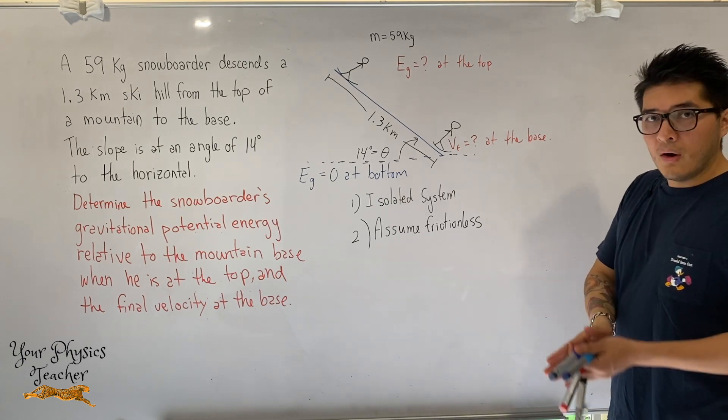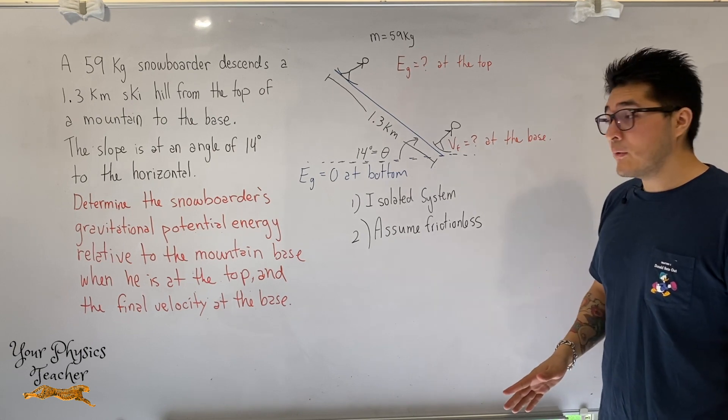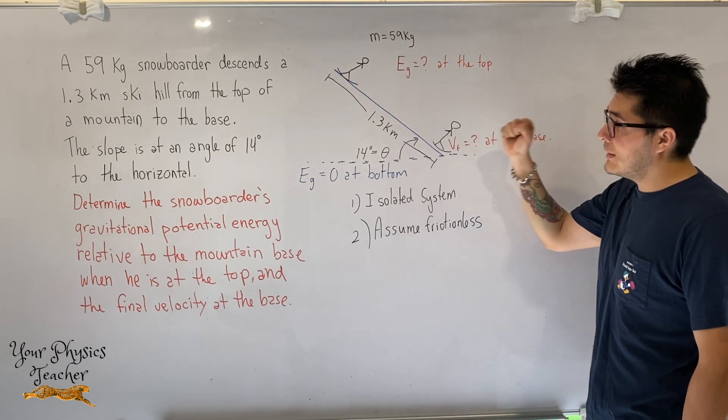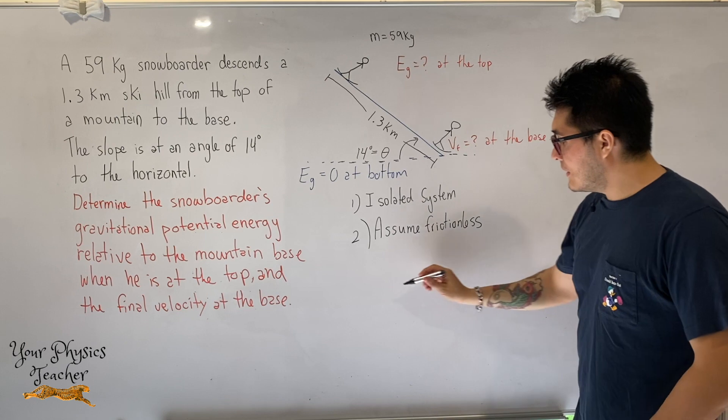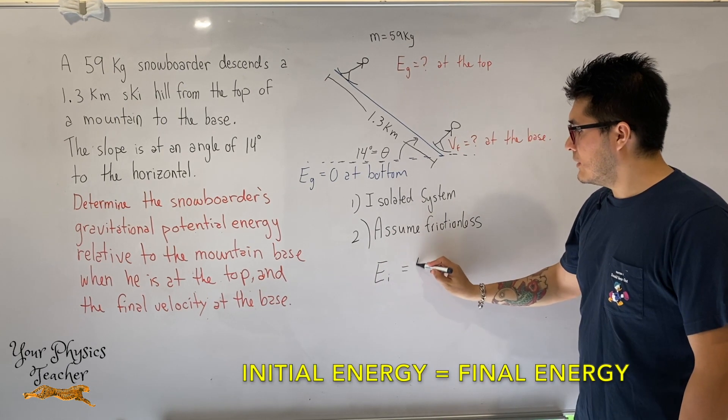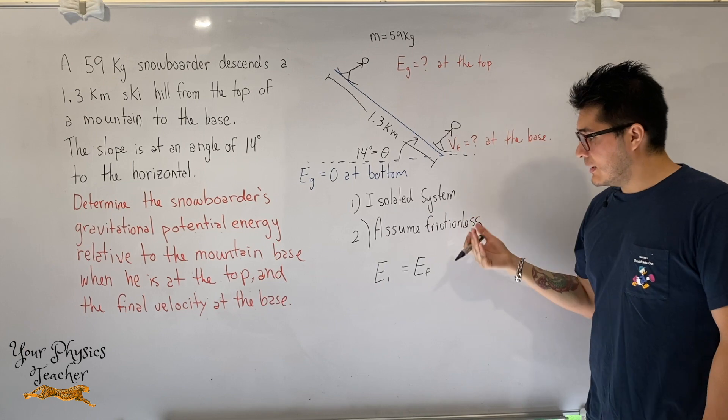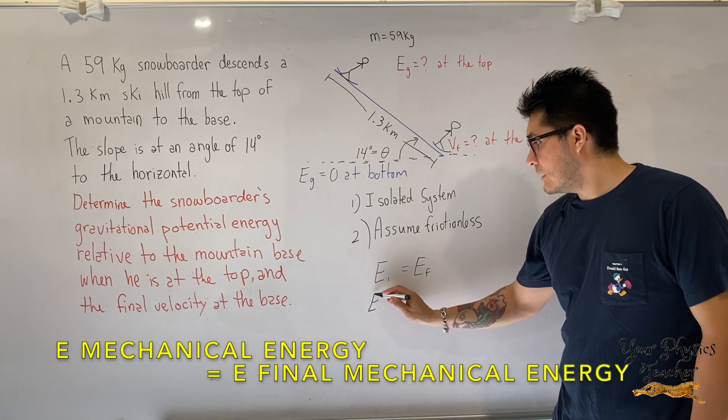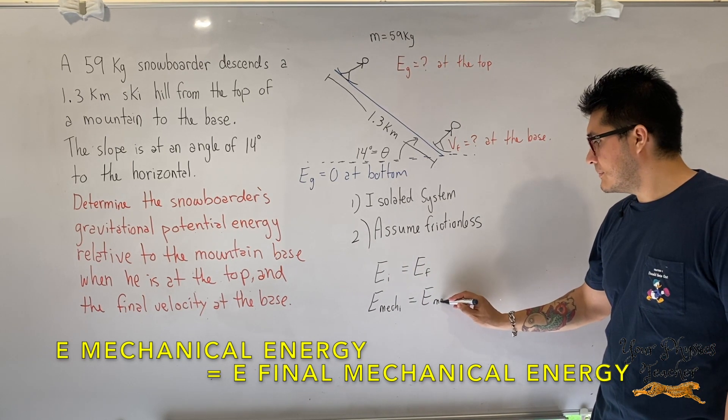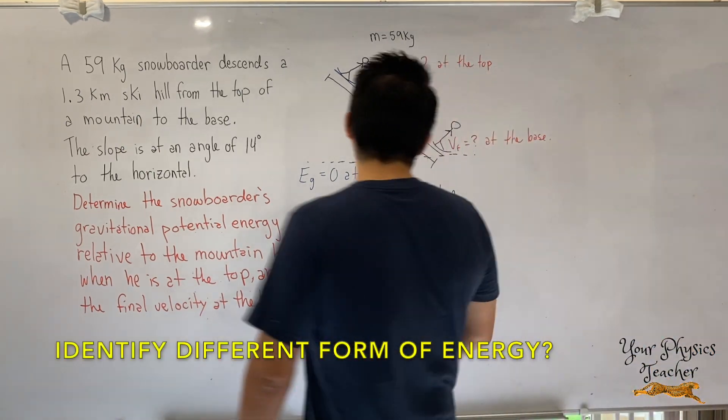Then with all conservation of energy type questions, there is no equation. The only thing that we know is that all the energy that it has initially is going to equal to all the energy that it has at the end. One way we can write that is E initial equals to E final. Because it is a frictionless case, we can say E mechanical initial equals to E mechanical final.